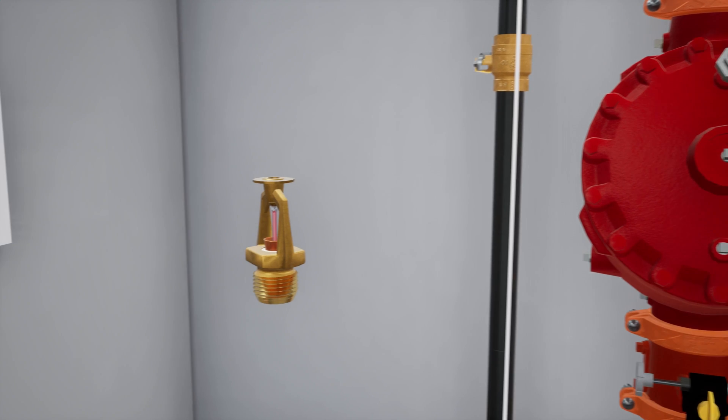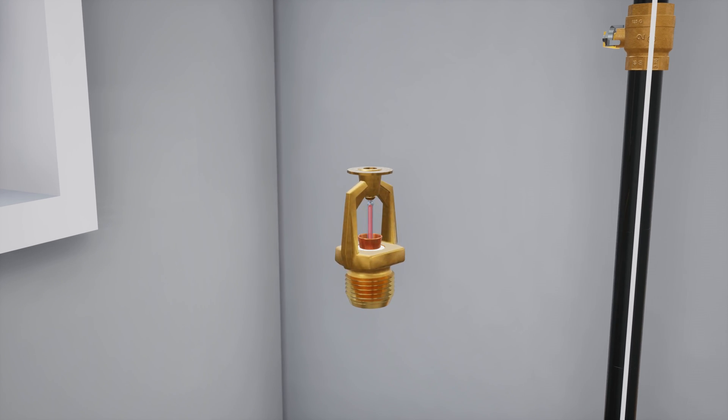The Viking VK800 is a fixed temperature release that is installed along a pilot line to activate deluge and pre-action systems. It is available in a range of finishes and temperature releases to suit various applications. Due to its specialized design, it has spacing advantages over standard sprinklers in several situations.